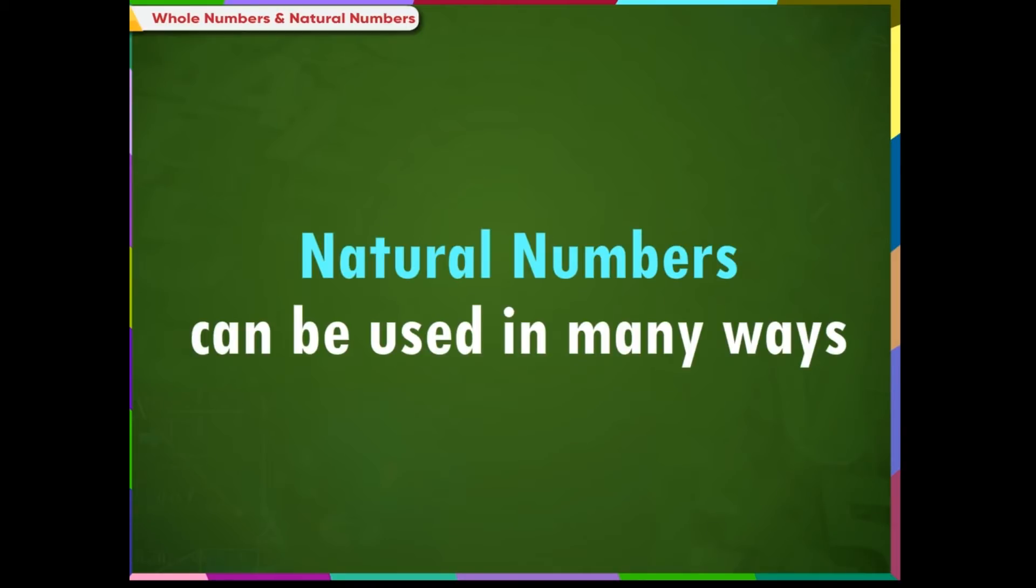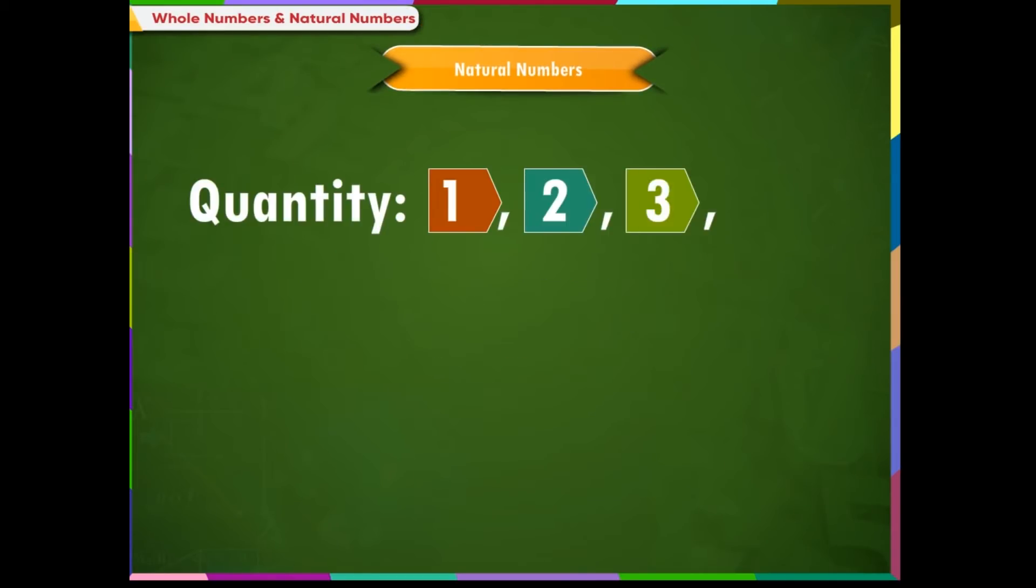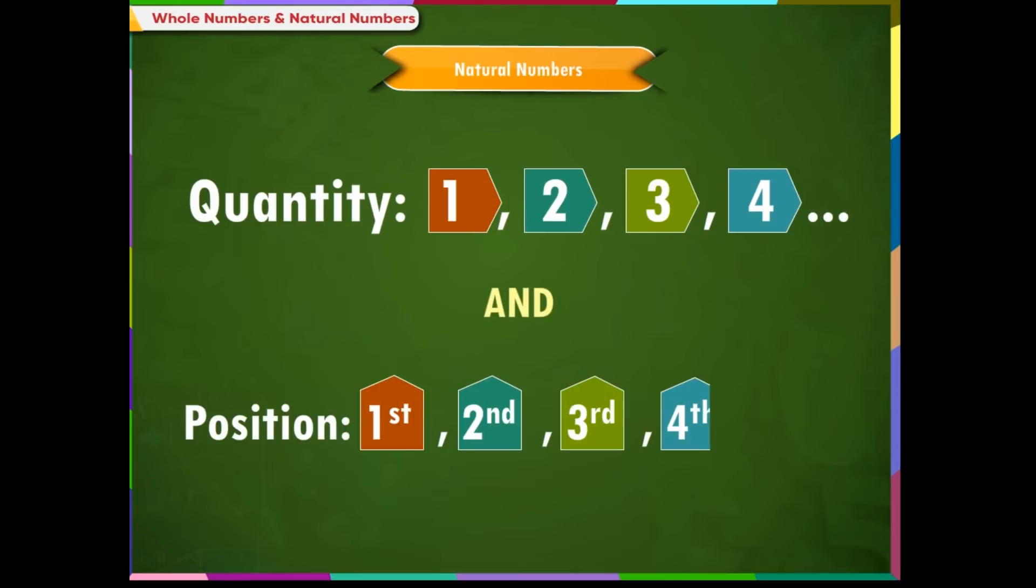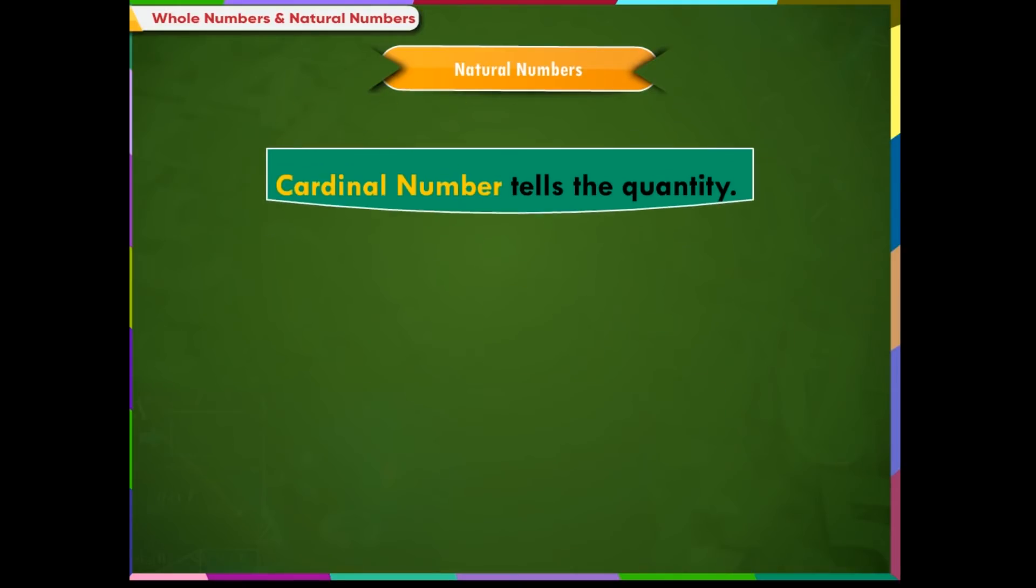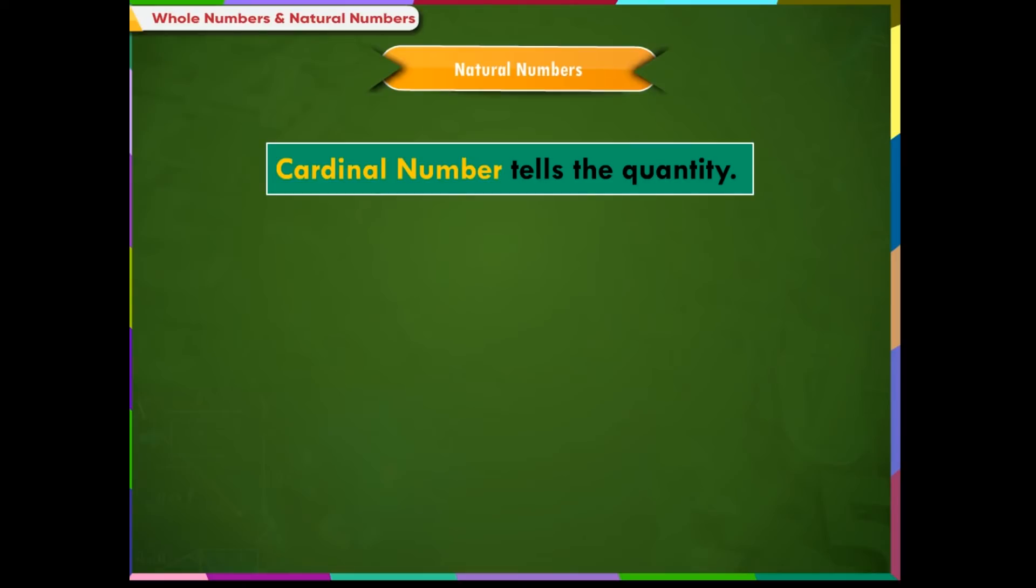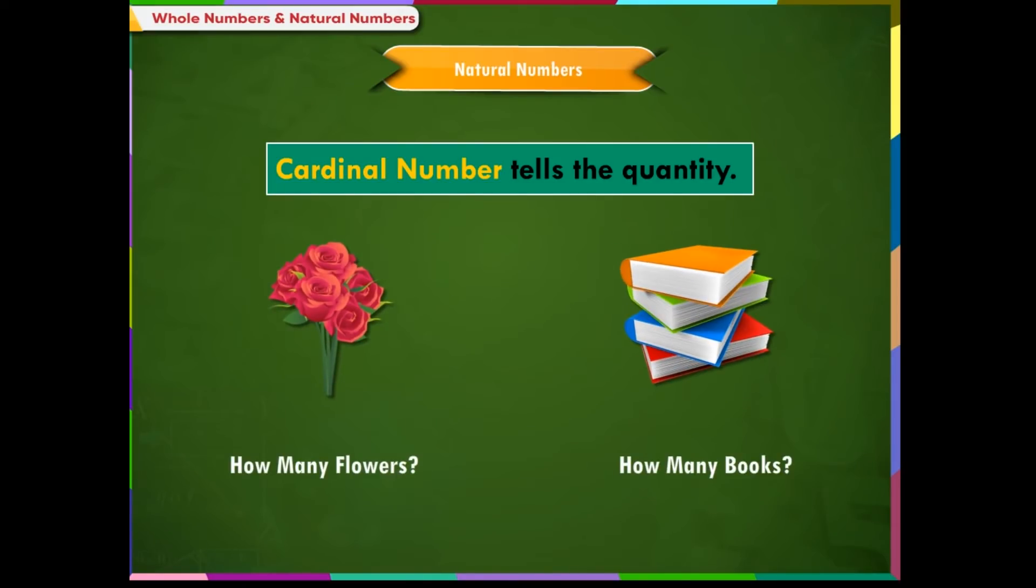Natural Numbers can be used in many ways. They can be used to show quantity and position. A cardinal number tells the quantity. It answers the question, how many? For example, how many flowers? How many books?